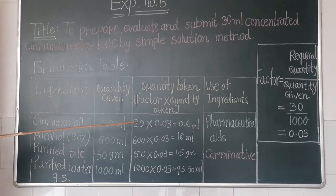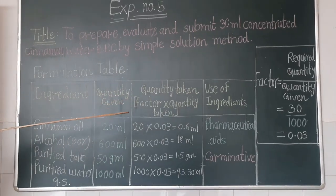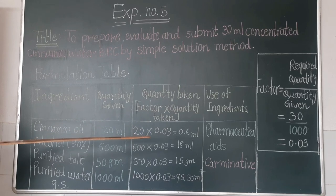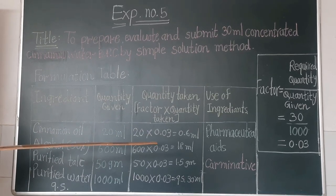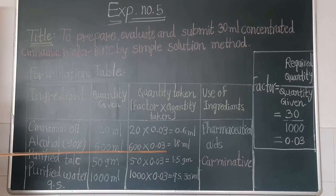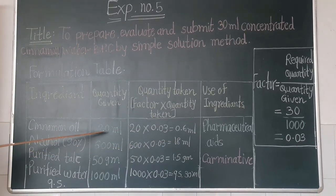For the quantity taken, we have to find out the factor first. Factor equals required quantity by quantity given. Here, required quantity is 30 ml and quantity given is 1000 ml, so factor is 0.03. We have to multiply this factor to given quantity.